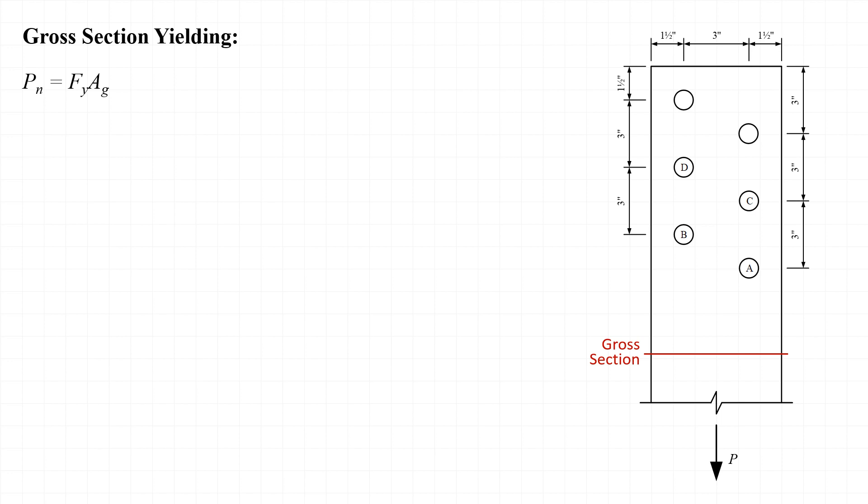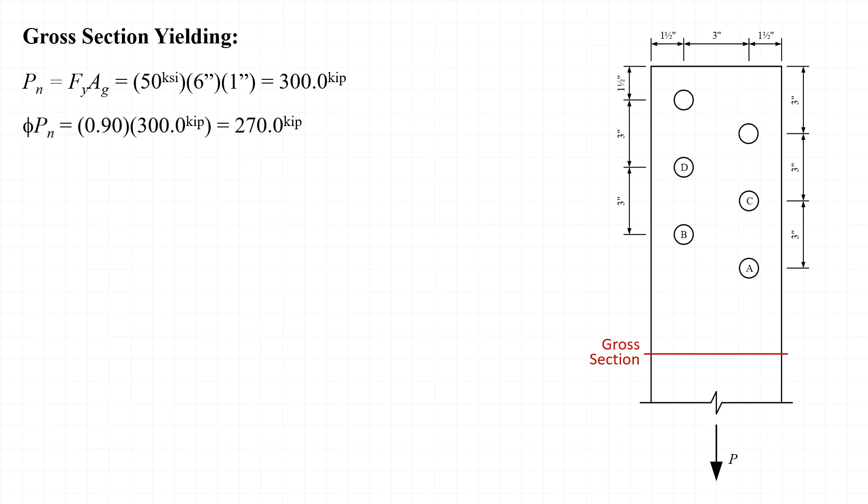The first limit state we'll evaluate is gross section yielding. In this case, the nominal strength is P sub n equal to F sub y times A sub g. The yield stress is 50 ksi, and the gross area is 6 inches in width by 1 inch in thickness. This gives us a nominal strength of 300 kips, and applying the resistance factor of 0.9 for gross section yielding, the design strength phi times P sub n is equal to 270 kips.